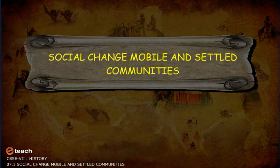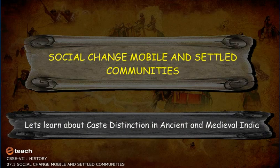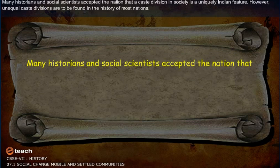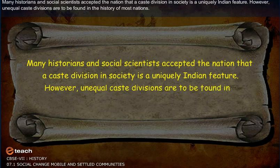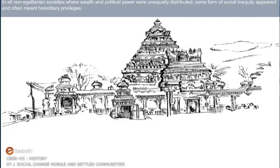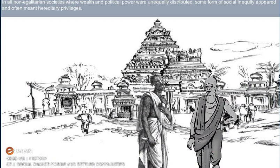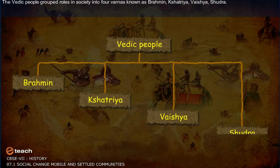Let's learn about caste distinction in ancient and medieval India. Many historians and social scientists accepted the notion that caste division in society is a uniquely Indian feature. However, caste divisions are to be found in the history of most nations. In all non-egalitarian societies where wealth and political power were unequally distributed, some form of social inequity appeared, often involving hereditary privileges. The Vedic people grouped roles in society into four Varnas: Brahmin, Kshatriya, Vaishya, and Shudra.